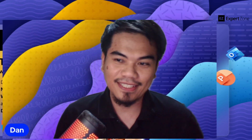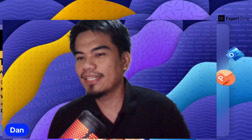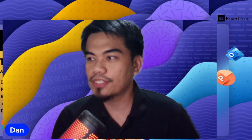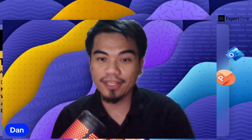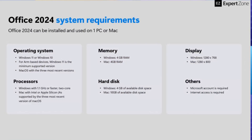Office 2024 is a perpetual version of Office. You will get the new Office 2024 in terms of productivity, and you still get the classic Office applications such as Word, Excel, and PowerPoint. For Office 2024, it supports Windows 11 and Windows 10. Do take note that Windows 10 will end its support next year, October 2025, so you might want to consider upgrading your device to fully utilize the features of Office 2024.